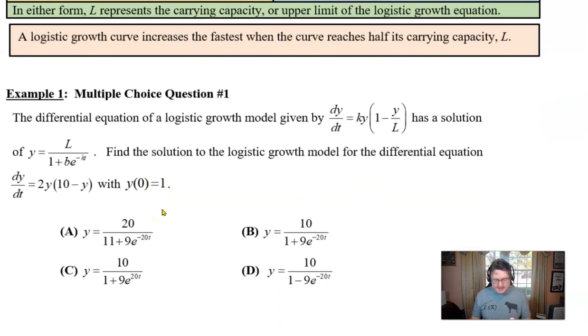Let's take a look at our example number one. We got the differential equation of a logistic growth model given by dy dt equals k times y, 1 minus y over L. We got very lucky in this particular problem. The formula was given to us. It has a solution of y equals L over 1 plus Beck. Find the solution to the differential growth model for the differential equation dy dt equals 2y quantity 10 minus y with the initial condition y of 0 equals 1.